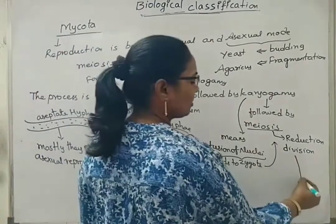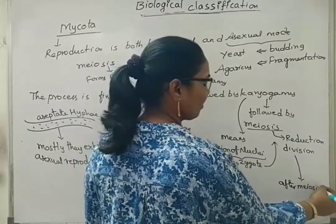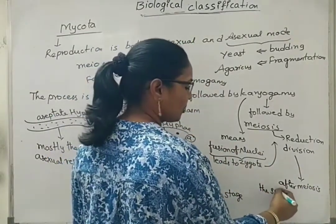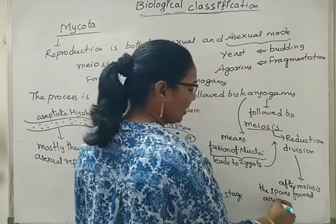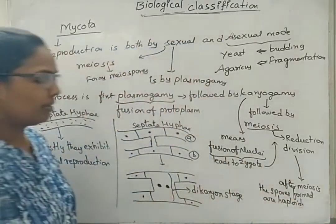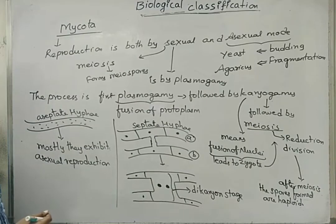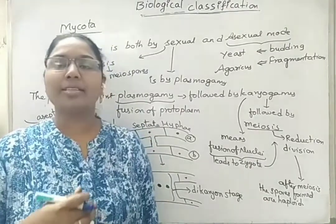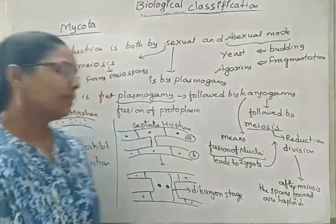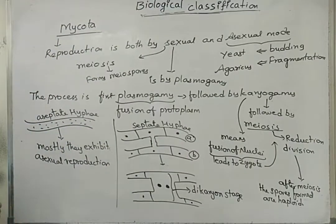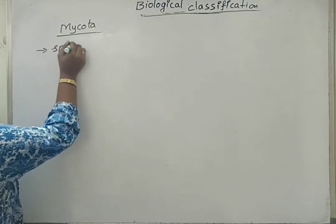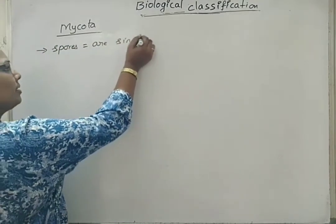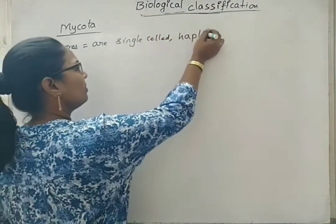After meiosis, the spores formed are haploid. These are considered as single-celled propagules. Why the term propagules? Because after formation of the spores, those spores get separated from the parent body and get dispersed to some other area along with the wind. Such types of structures are called propagules, which get separated from the parent body and get dispersed into some other area. Spores are single-celled haploid propagules.